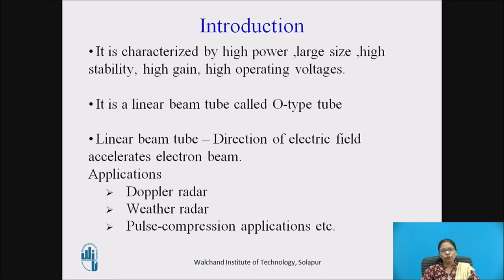It is called a linear beam tube because the direction of the electric field accelerates the electron beam. Klystron has applications in Doppler radar, weather radar, and pulse compression applications.